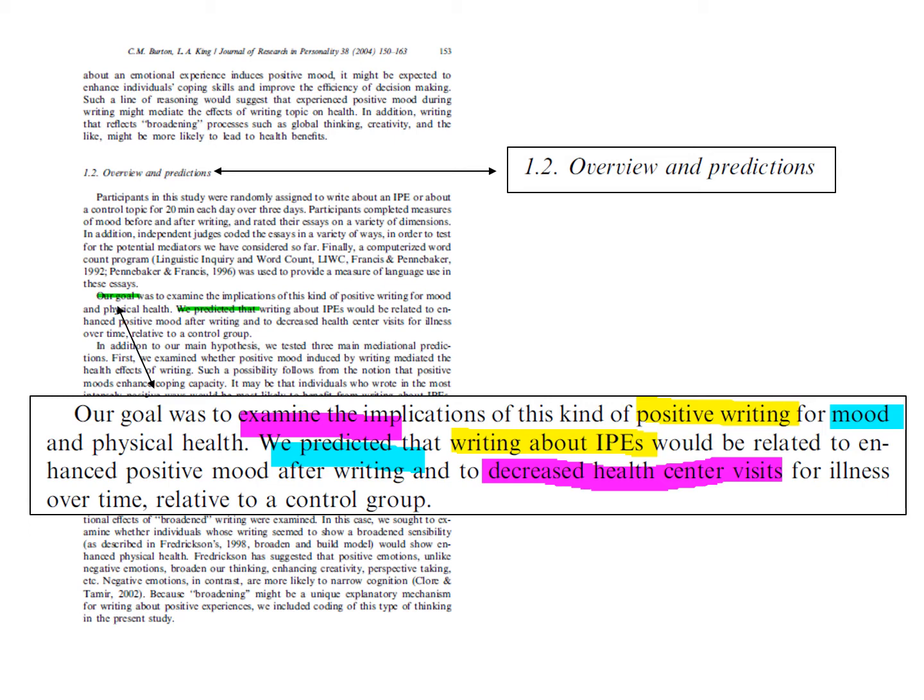we predicted that. The goal is more broad than the hypothesis, but they both reference three variables. I highlighted them in different colors in this slide to help identify them and point out that they appear in both places. Positive writing, operationalized as writing about intensively positive experiences, which we learned the abbreviation for in the abstract. Mood, operationalized in terms of positive mood after writing, and physical health, operationalized in terms of the number of health center visits over time.